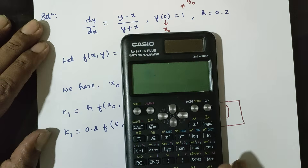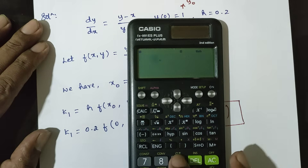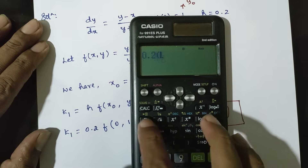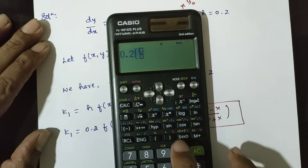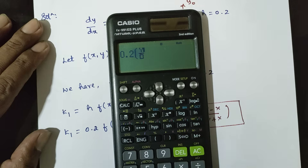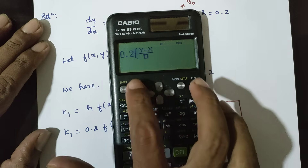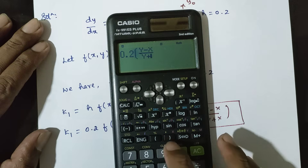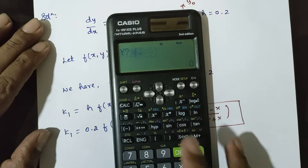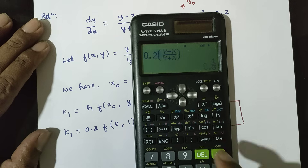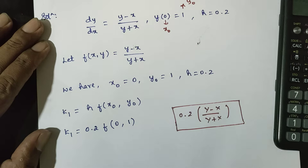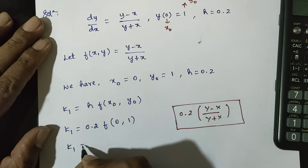Here we go. Using the calculator: 0.2 into (y minus x) divided by (y plus x). Y value is 1, X value is 0. Answer: k1 is equal to 0.2.